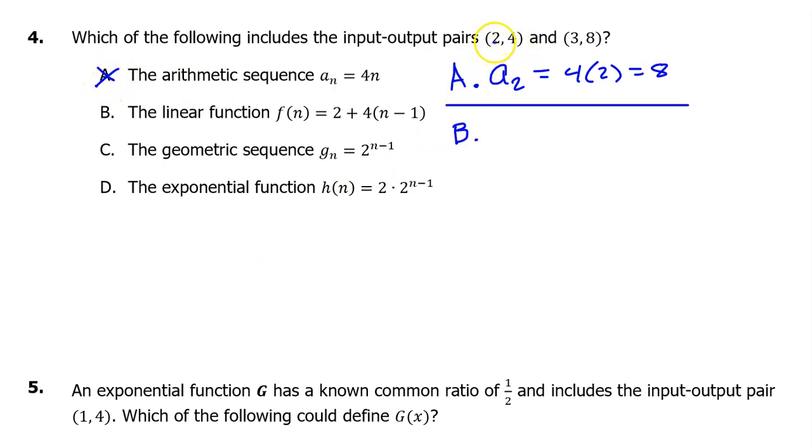Now let's evaluate option B at 2 and see if we get 4. So this will become f(2), which would equal 2 plus 4 times (2 minus 1). 2 minus 1 is 1, so this is really just 4. And 2 plus 4 is 6, not 4. So the answer is not B.